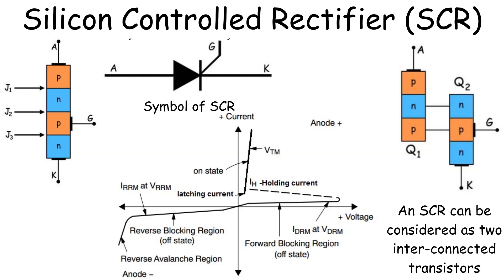The gate terminal, which is connected to the inner P-type layer, is used to control the device. Applying a small current to the gate can activate the SCR, allowing a larger current to flow between the anode and cathode.